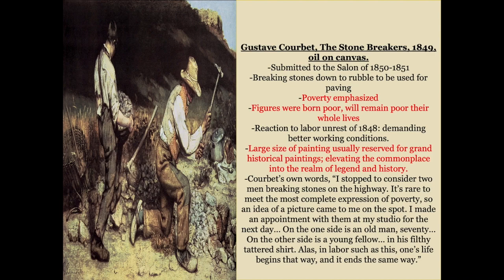Poverty is emphasized here — the figures were born poor and will remain poor. It was a reaction to labor protests taking place because of bad working conditions in various French factories, as the Industrial Revolution was in full force. Courbet himself said: 'I stopped to consider two men breaking stones on the highway. It's rare to meet the most complete expression of poverty... on one side is an old man of 70, on the other a young fellow in his filthy tattered shirt. Alas, labor such as this is how one's life begins and ends.' It's meant to make you think and have feeling for people living in poverty — not to dismiss them, but to shine light on lives they can't escape.